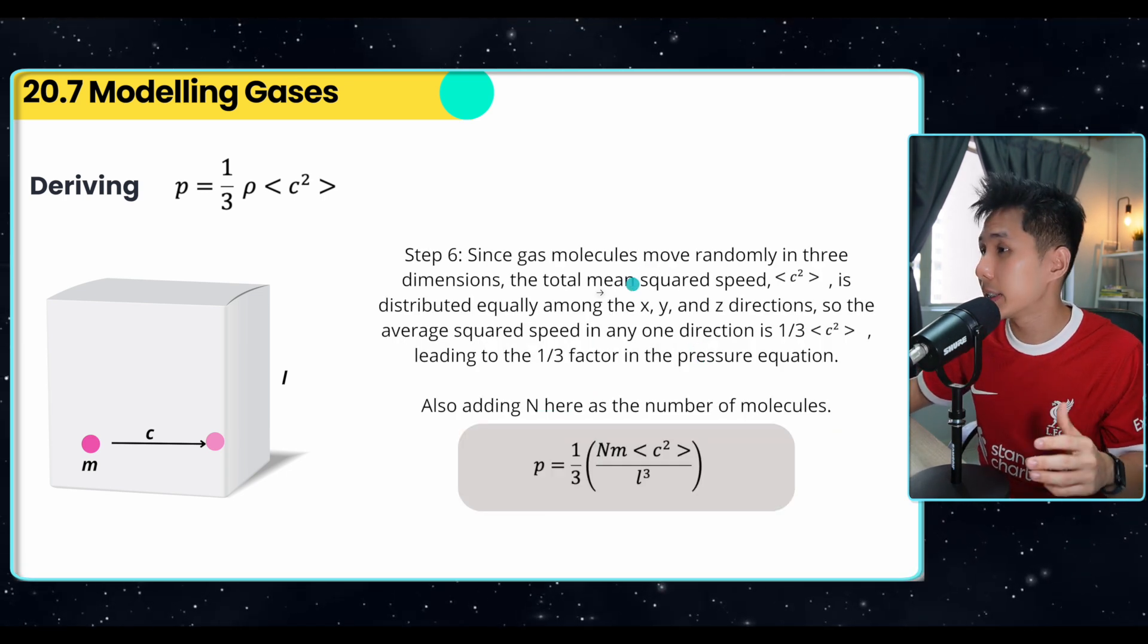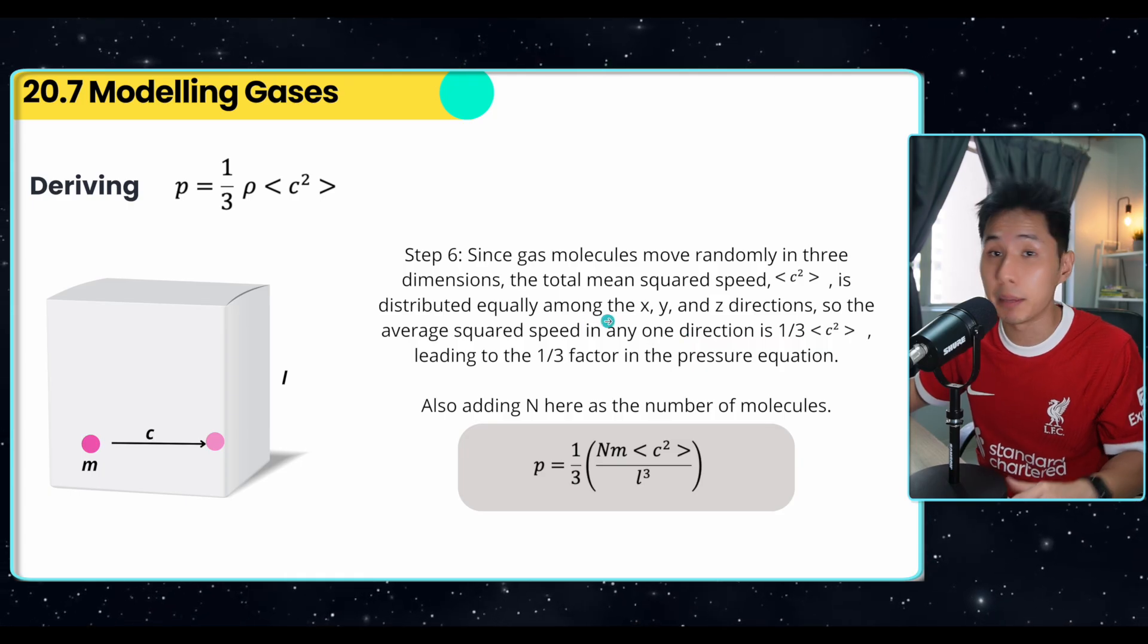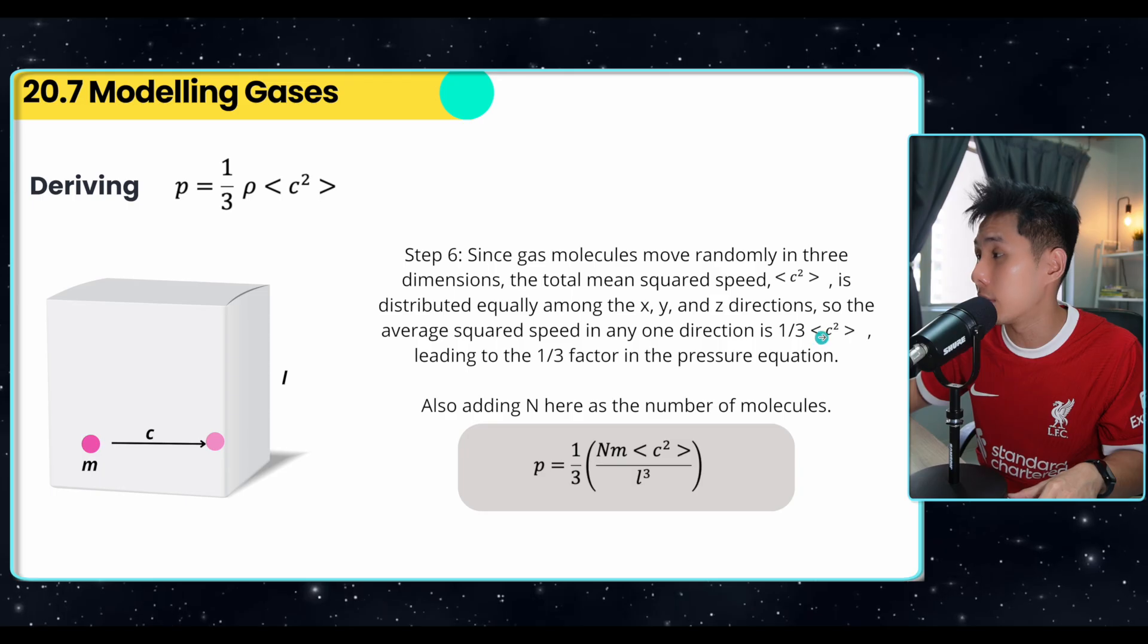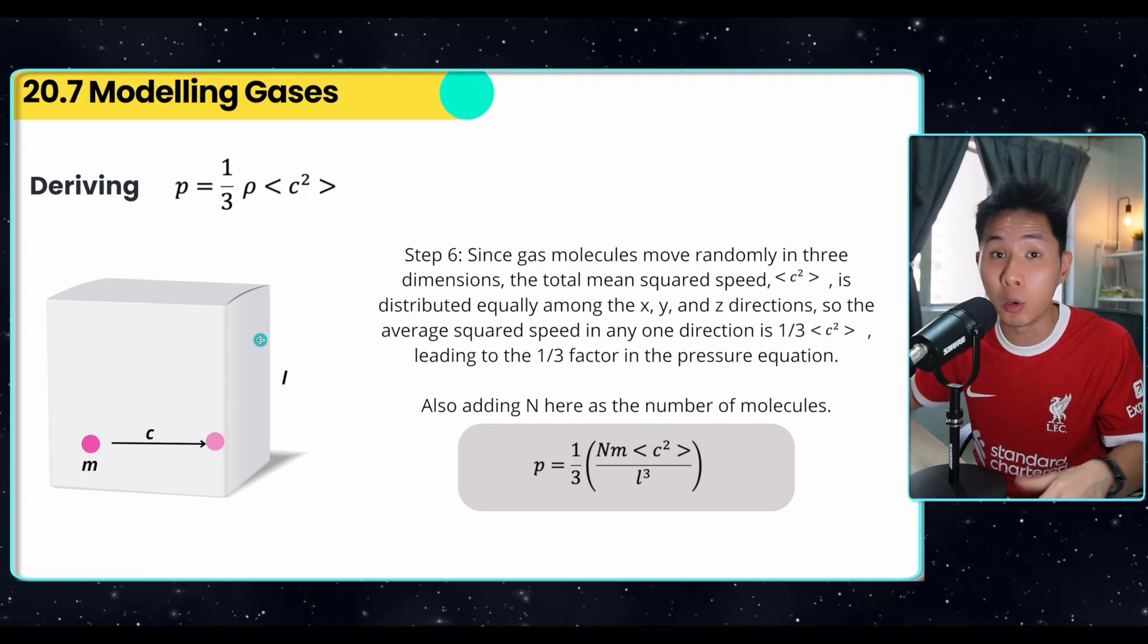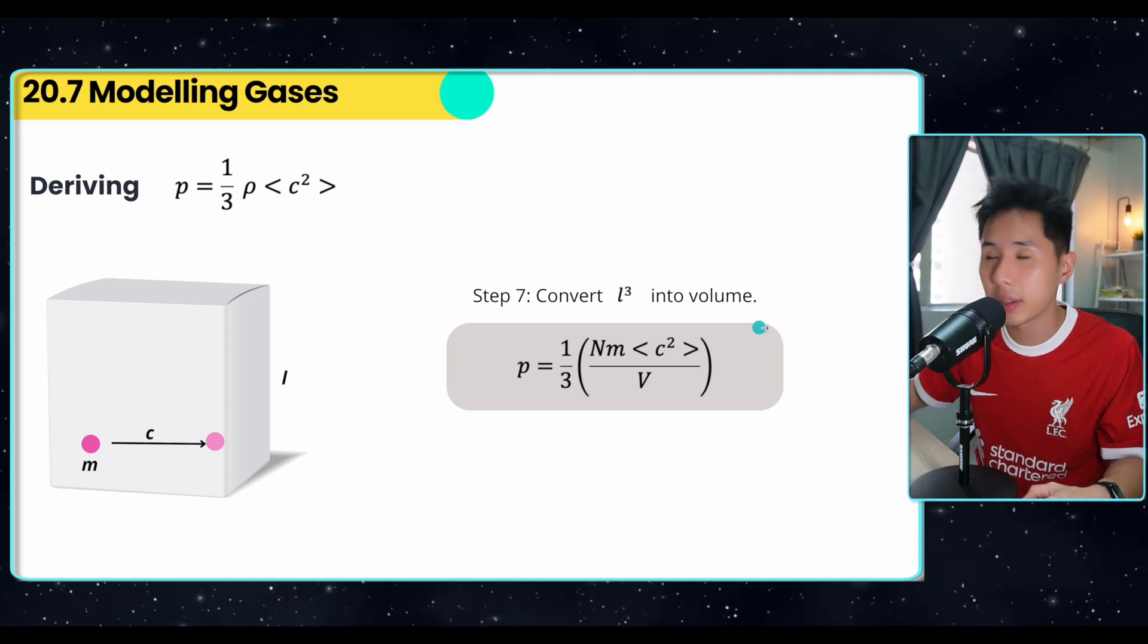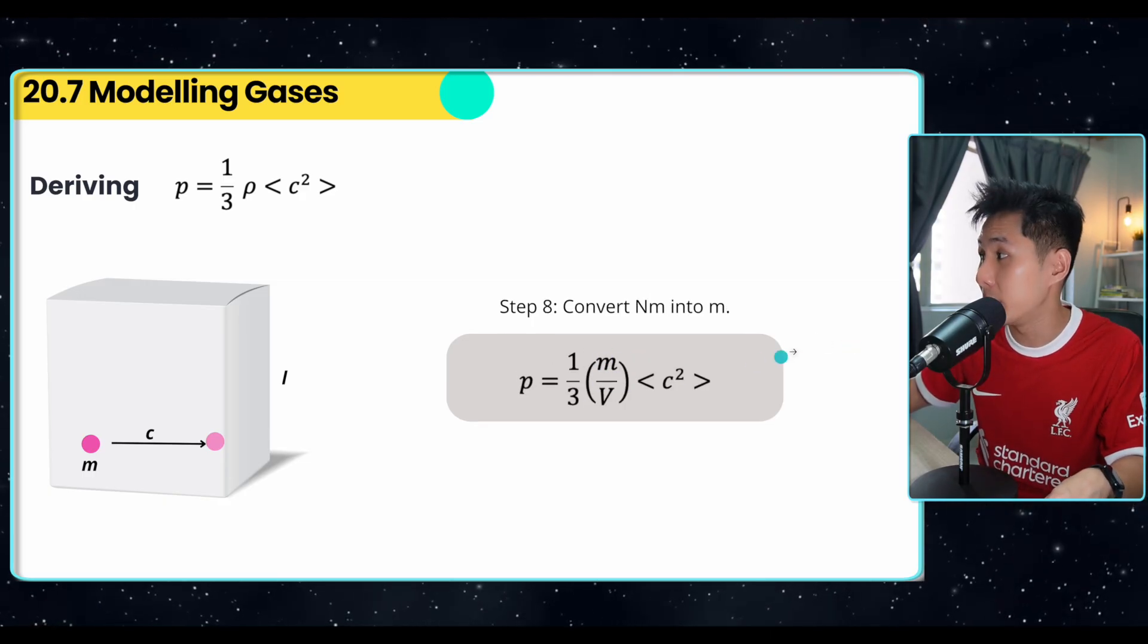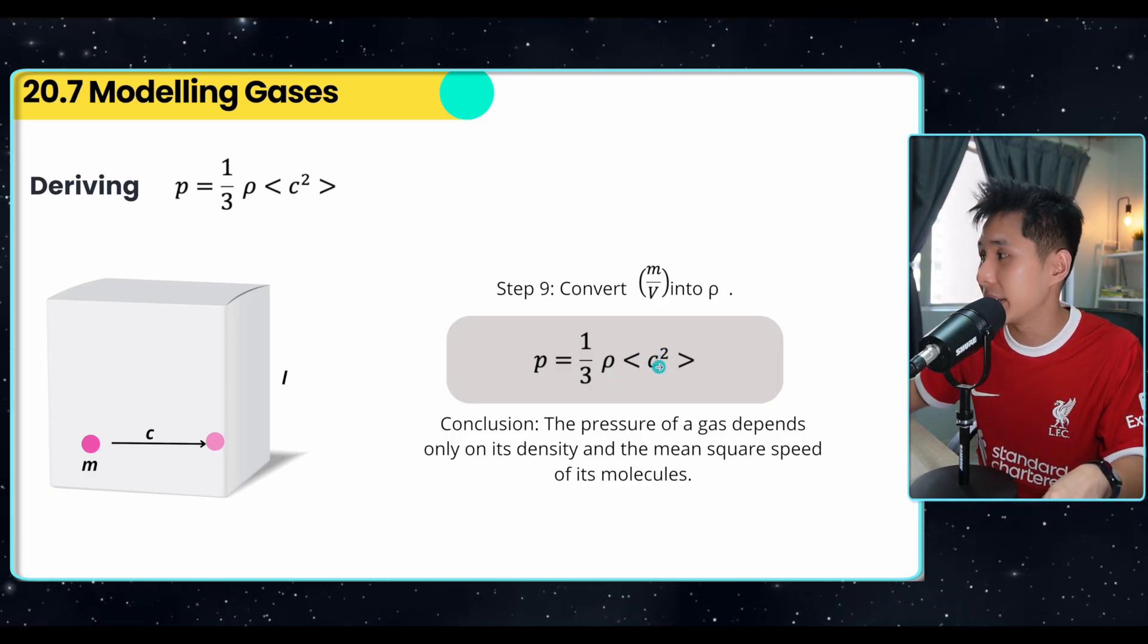And step 6, since particle move randomly in 3 dimension, 1, 2, 3, the total mean square speed c square is distributed equally among the x, y, z direction. That's why we'll add 1 over 3 here to the equation. Because the average square speed in any one direction is 1 third of c square. And we also add another quantity called n here to represent the number of particles. Because in the beginning, we only assume one particle. So I'm just going to convert the side length cubic into volume. We are getting closer. And we can convert nm into m, because it's just the number of particles multiplied by the mass. So we have the total mass.